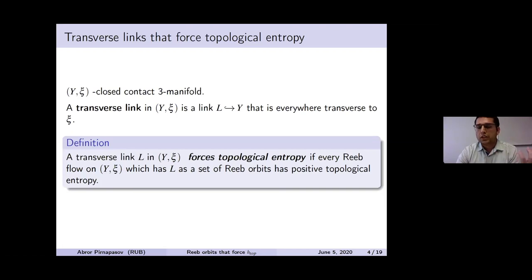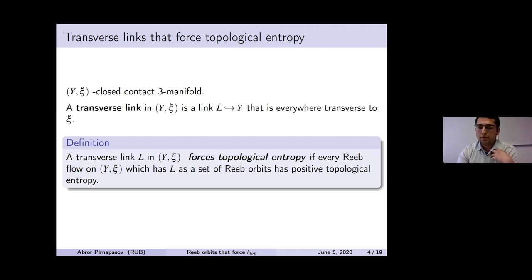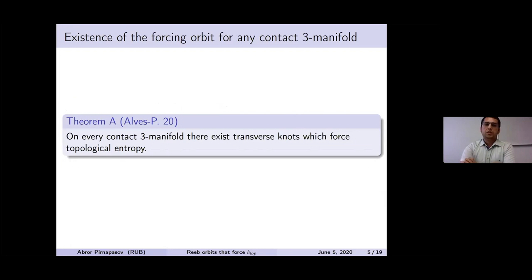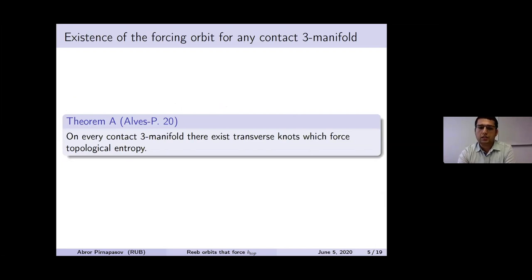One can ask: does there always exist such a transverse link for every contact manifold? The answer is yes. For every contact 3-manifold there exists a transverse knot which forces topological entropy. Here it does not depend on the contact structure — only this transverse knot needs to be a periodic orbit.